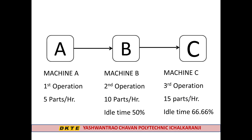These machines operate at 10 minutes per hour and 20 minutes per hour, and then the machine is 11 minutes per hour. It is not a problem. The line is unbalanced, and machine utilization is not optimal. The line is unbalanced for machines B and C.